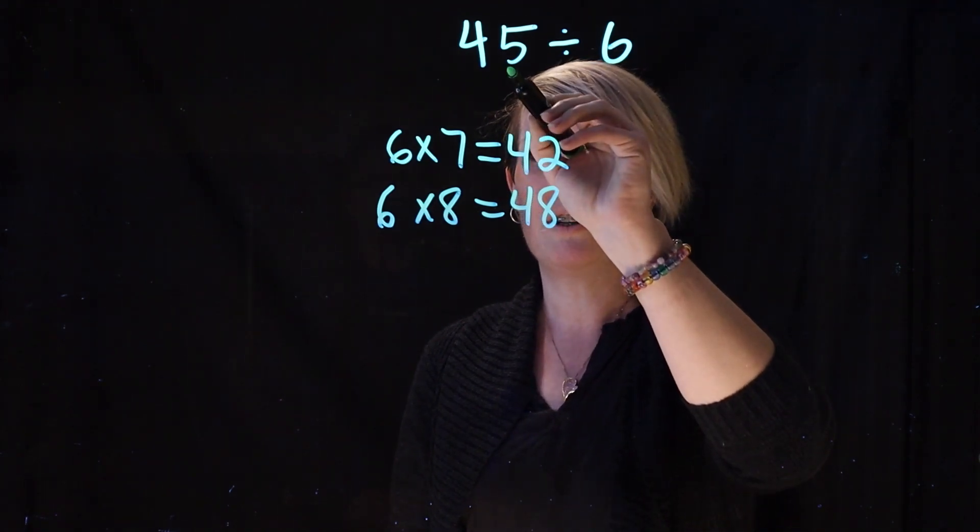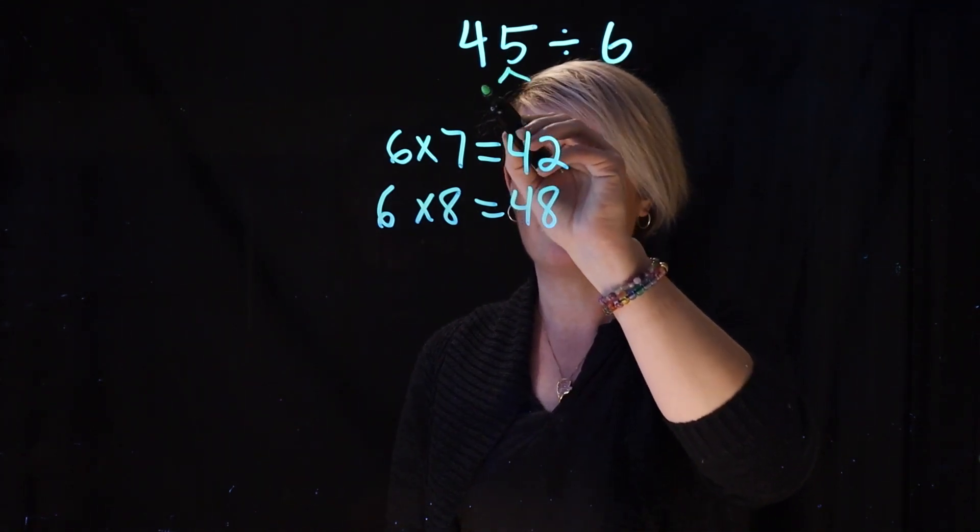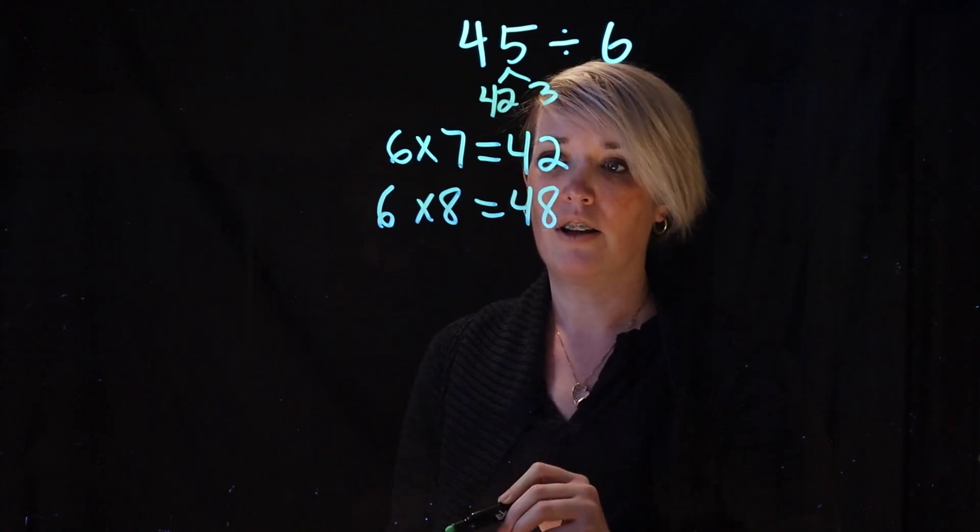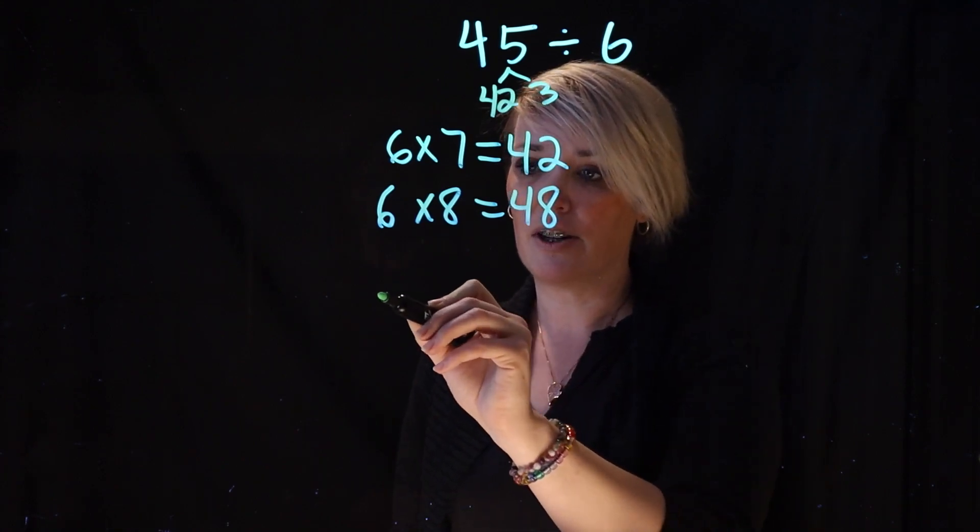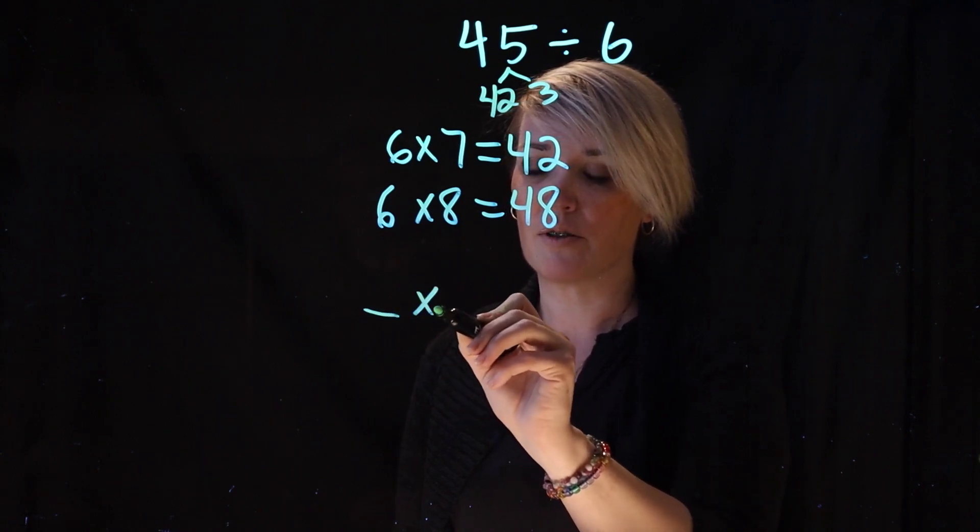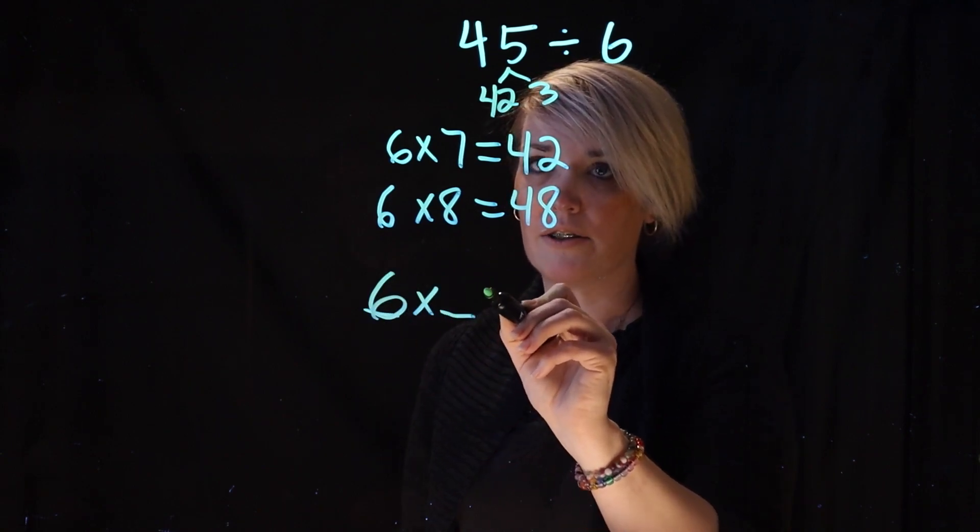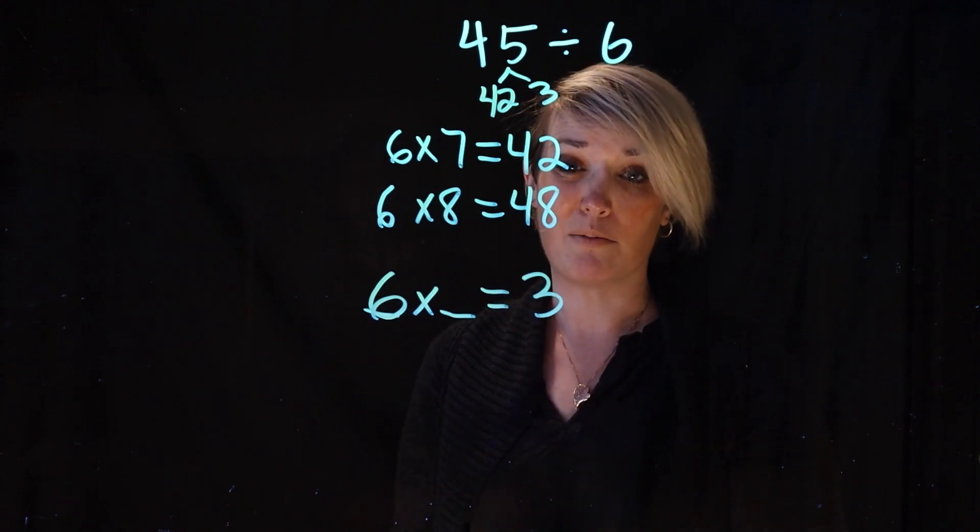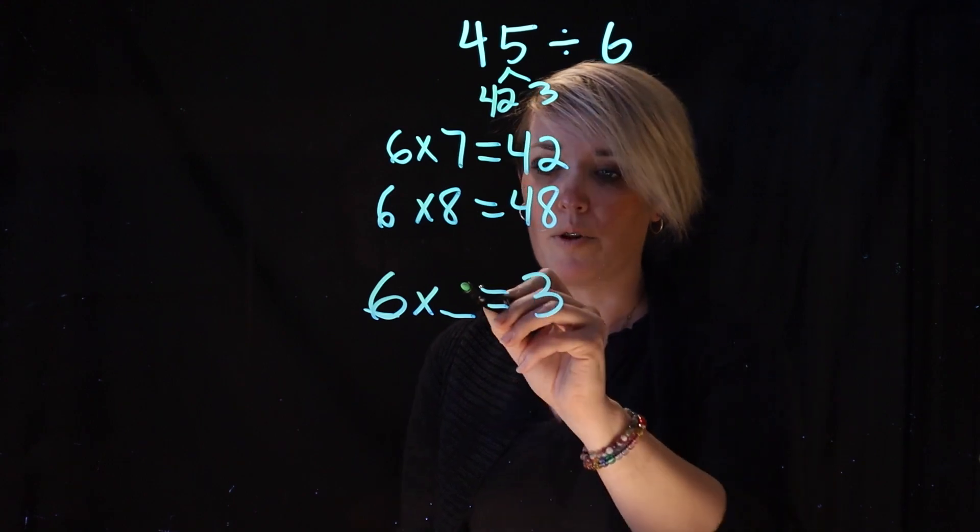And then he said, you know what, I'm going to go ahead and I'm going to actually think about 45 as 42 and 3. So now, he said, what he needs to figure out is 6 times what equals 3. And he said, that's pretty easy because it's just a half or 0.5.